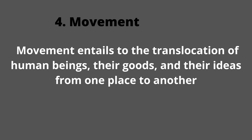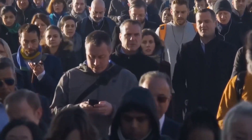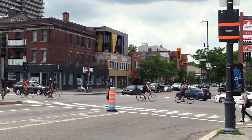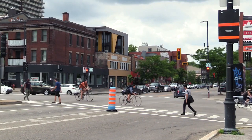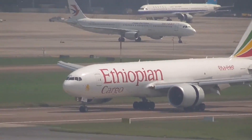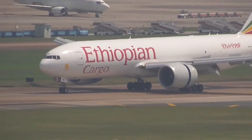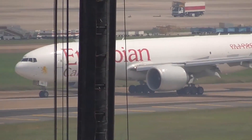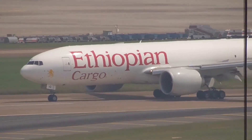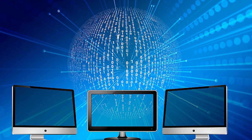Movement entails the translocation of human beings, their goods, and their ideas from one place to another. The physical movement of people allowed the human race to inhabit all the continents and islands of the world. Another aspect of movement is the transport of goods from one place on the earth to another. The third dimension of movement is the flow of ideas that allows the unification of human civilization and promotes its growth and prosperity. Thus, people and objects involve physical movement while ideas can flow from one place to another in a moment via different media.